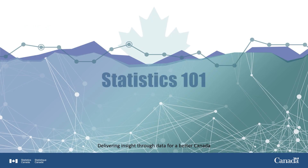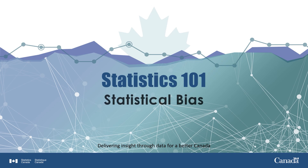In everyday language, bias refers to how a person's point of view, values, or beliefs can influence their judgment or decisions in particular circumstances. In this video, we will explain the concept of statistical bias, which occurs when statistics differ systematically from the reality they are trying to measure because of problems with the way the data were produced.